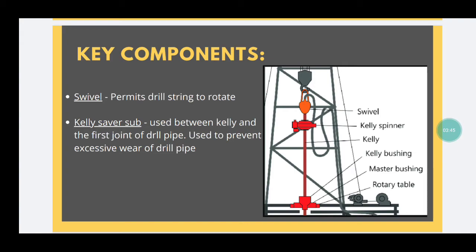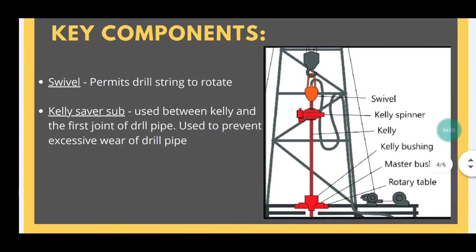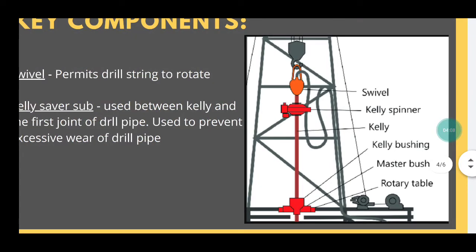One important component is the swivel. The swivel permits the whole drilling motion. The components above the swivel — such as the hook, traveling block, and crown block — are stationary, while everything below the swivel can be rotated. So the swivel permits efficient rotational function on our rigs. This image shows all the components involved, and this is how a typical rotary system looks on a rig.